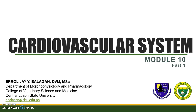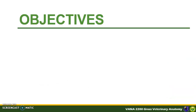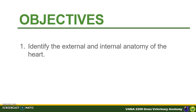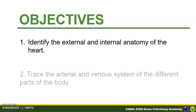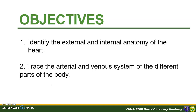Information on the main venous drainage will be discussed after the arterial supply. At the end of this module, you should be able to identify the external and internal anatomy of the heart and trace the arterial and venous system of the different parts of the body.